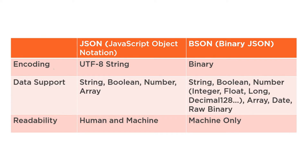When it comes to encoding format, JSON uses UTF-8 string encoding, whereas BSON uses binary encoding. For data support, JSON supports types like string, boolean, number, and array, whereas BSON supports a wider variety including integer and float. For readability, JSON documents are readable by both humans and machines, whereas BSON is readable by machines only — it is not human-readable.